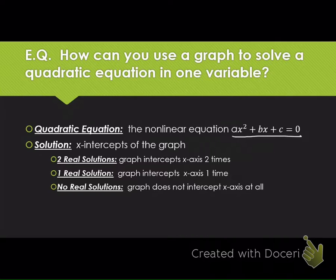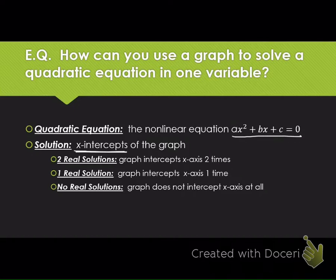The solution to a quadratic equation refers to the x-intercepts of the graph. X-intercepts are the points where the graph crosses the x-axis. You can have two real solutions, meaning the graph intercepts the x-axis twice; one real solution, where the graph intercepts the x-axis one time; or no real solution, meaning the parabola does not cross the x-axis at all.